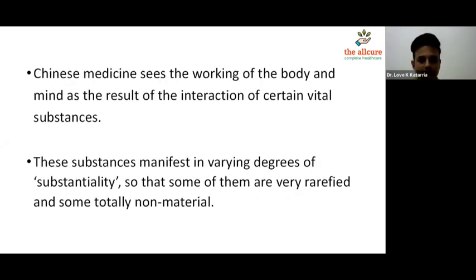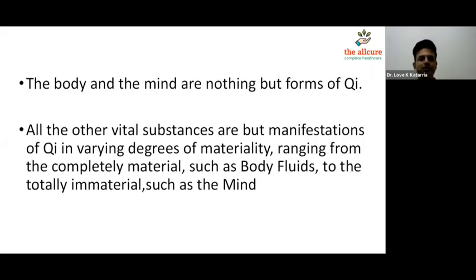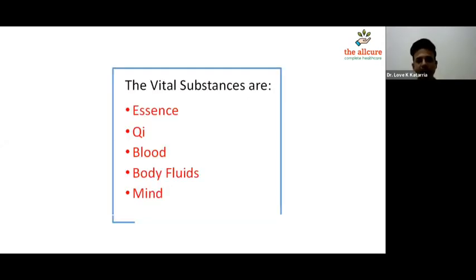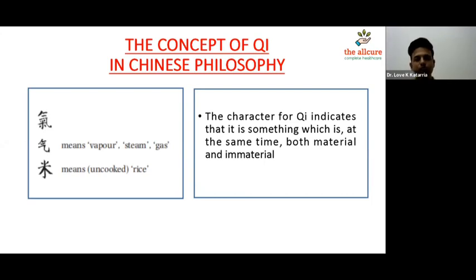Chinese medicine sees the working of the body and mind as the result of the interaction of certain vital substances. These could be material substances like essence — in fact, your body itself is the manifestation of Qi — or in a non-material form like mind. So body and mind are nothing but forms of Qi. All the other vital substances are manifestations of Qi in varying degrees of materiality, ranging from the completely material such as body fluid, to the totally immaterial such as mind.